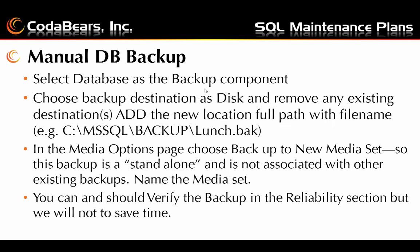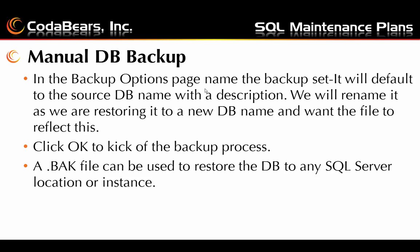When you're doing a manual backup, you have to set your parameters and location manually. It's simply done from a right-click on a database in the Object Explorer when you're running SQL Management Studio. Then you select a full backup as your type and copy only, which means SQL will not associate this particular backup with other backup sets — it will be a standalone copy. You select your database as the component to back up, choose your destination and media location, typically to a disk. You should verify the backup in the reliability section, then name your backup set and click OK to kick it off. Once done, you're left with a .bak file that can be used to restore the database to any SQL Server location or instance.